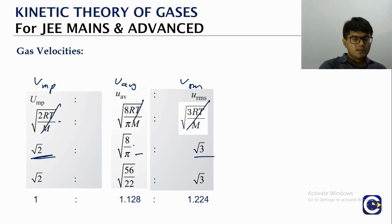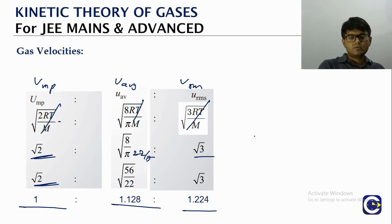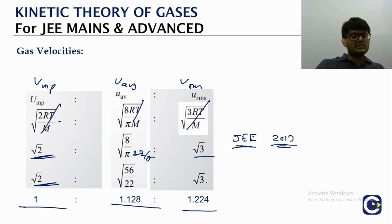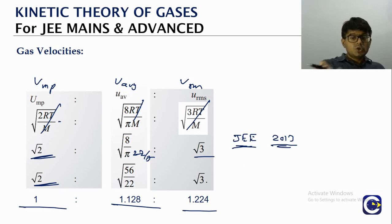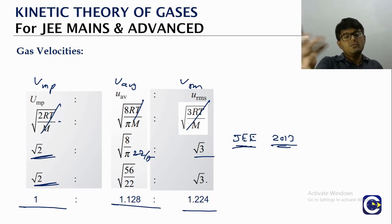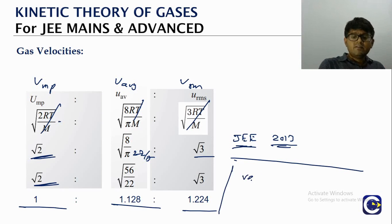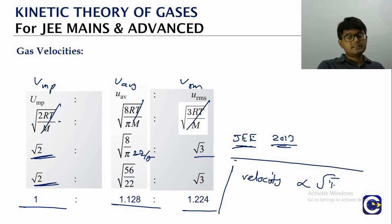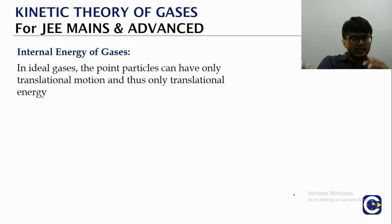The ratio v_mp : v_avg : v_rms = √2 : √(8/π) : √3 = 1 : 1.128 : 1.224. This ratio appeared as a JEE question (2013). Using this ratio, if you know one velocity you can find the others. All velocity terms are directly proportional to √T — increasing temperature increases all velocity terms.